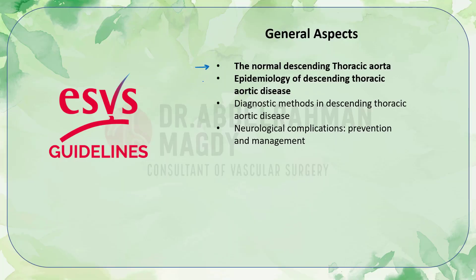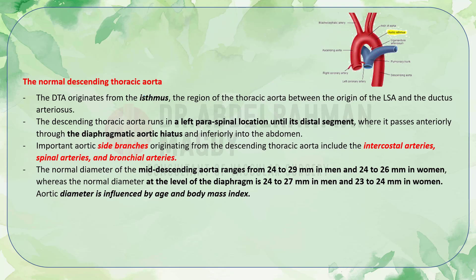The normal descending thoracic aorta — its anatomy and histology. The descending thoracic aorta starts from, or originates from, the isthmus, which is the region between the left subclavian artery and the ductus arteriosus. It runs in the left paraspinal location until its distal segment, where it passes anteriorly through the diaphragmatic aortic hiatus and inferiorly into the abdomen.